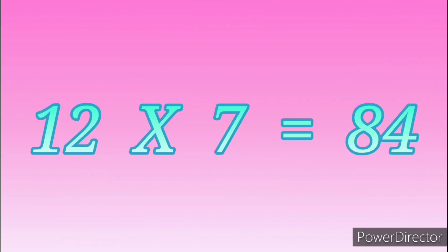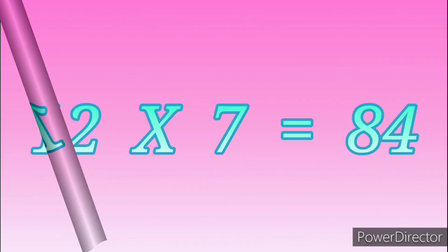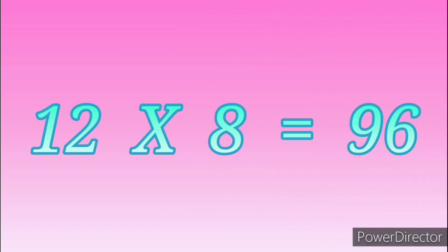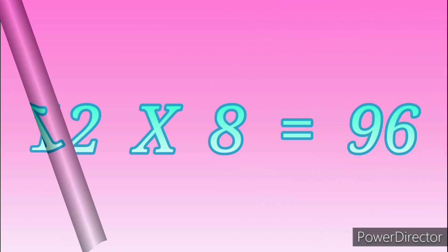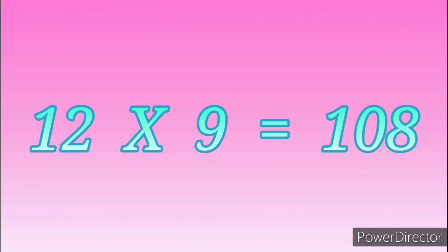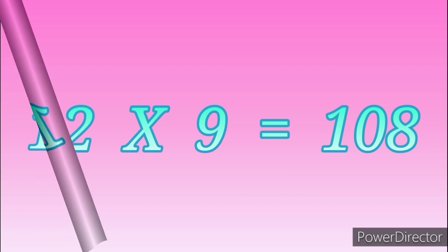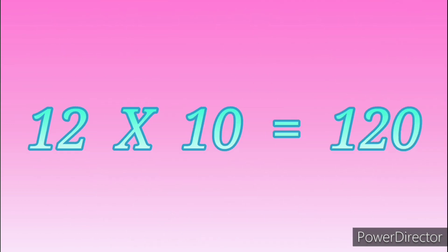12 sevens are 84. 12 eights are 96. 12 nines are 108. 12 tens are 120.